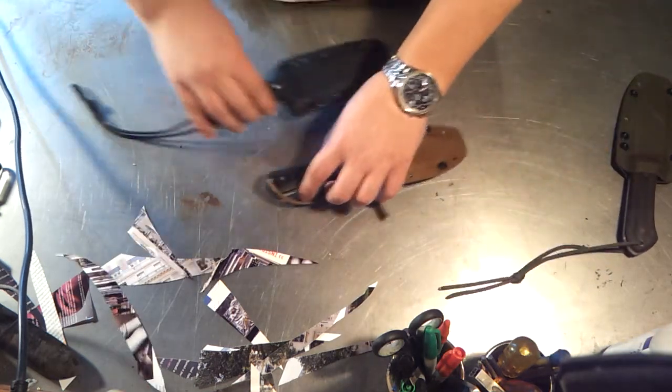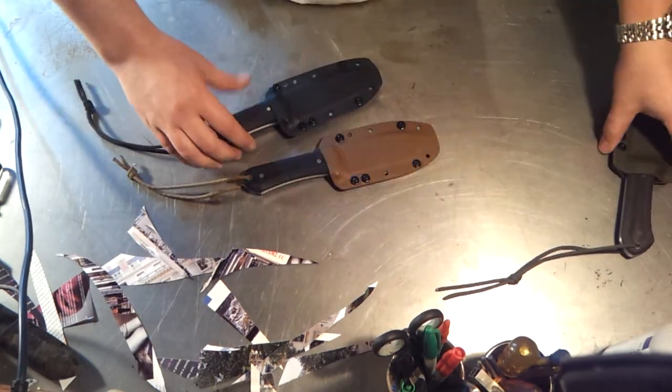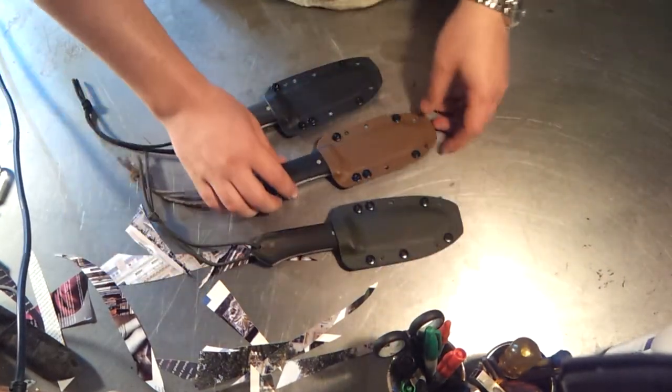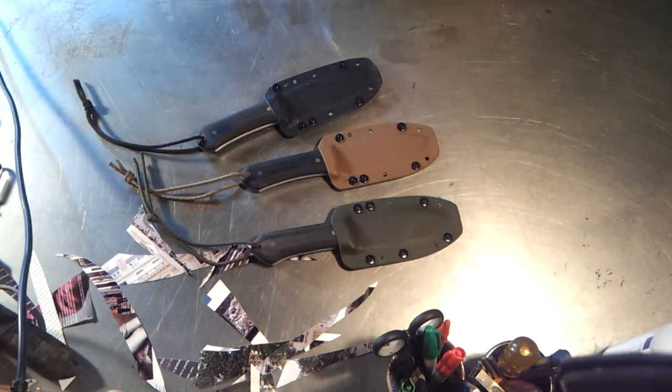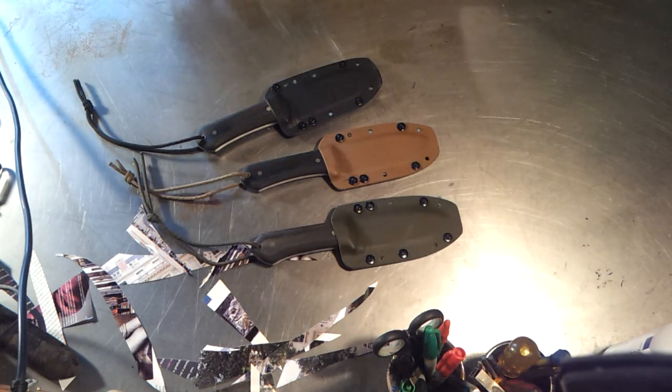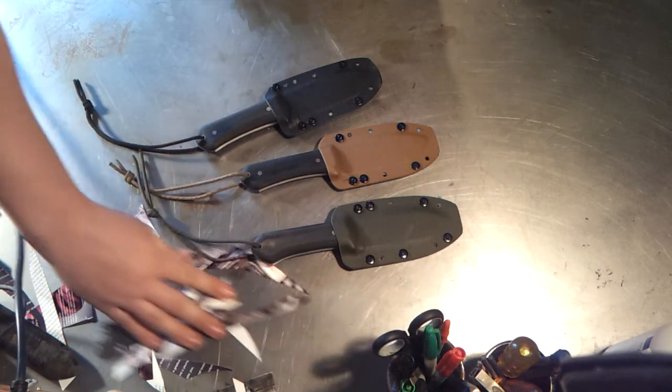So those are the three blades, guys. Gonna try to keep this video short so it uploads fast. All the sheaths are beveled. Again, you can take them apart, you can add a larger or small tech lock. I have them all available here if you're interested in that. Again, the best way to check out the blades and find out the price and stuff is through my website. I've updated the available knife section with these.